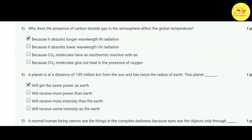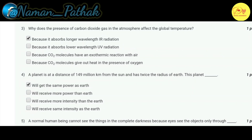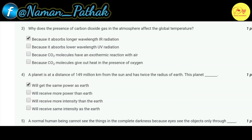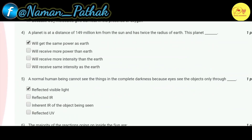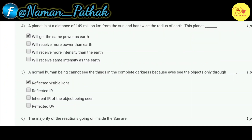Our third question is: why does the presence of carbon dioxide gas in the atmosphere affect the global temperature? The correct option is A: because it absorbs longer wavelength IR radiation.